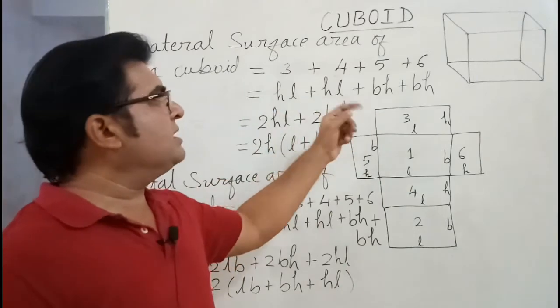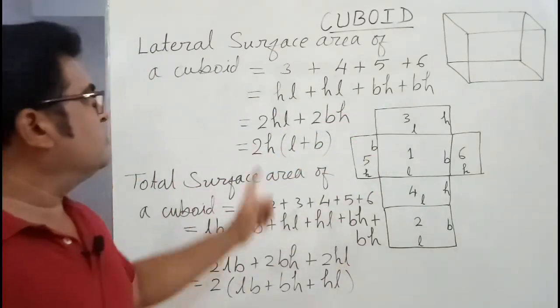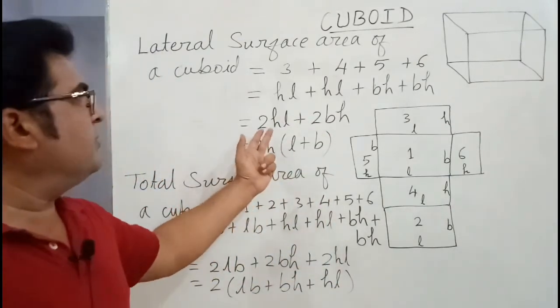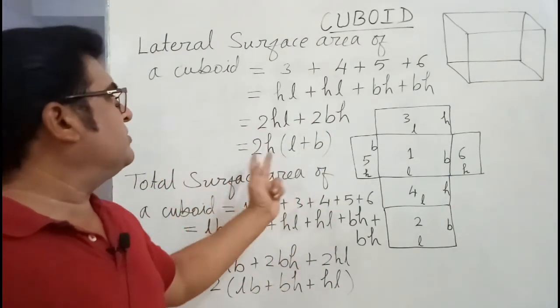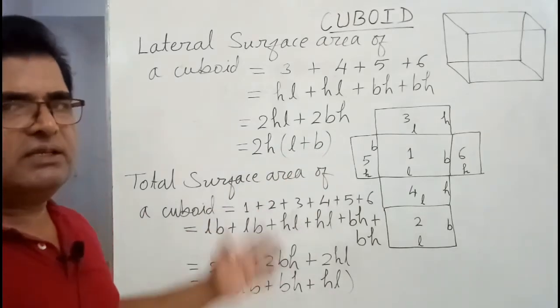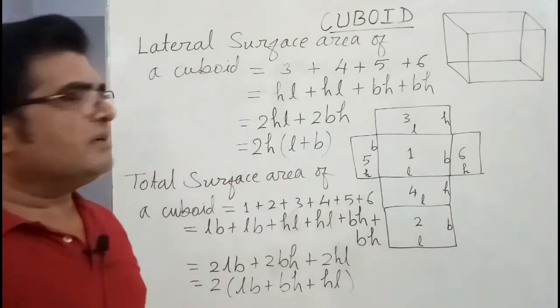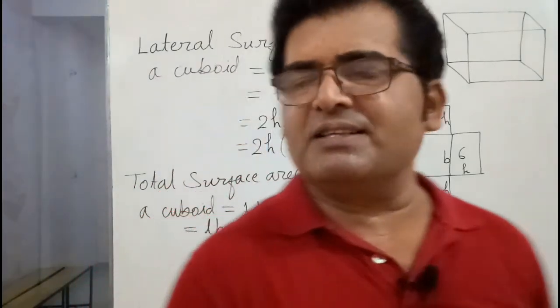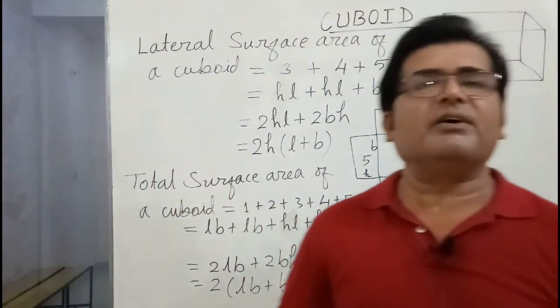When you add them, you see there are 2 times HL, 2 times BH. So 2HL plus 2BH. 2H is common there, so take 2H as common. So 2H as common becomes 2H into (L plus B). This is the formula for lateral surface area of a cuboid.